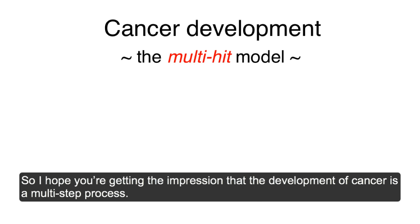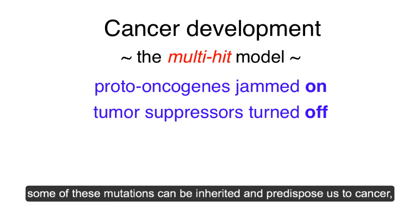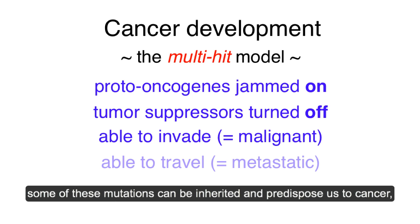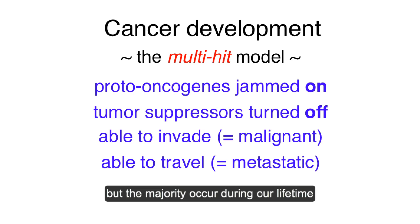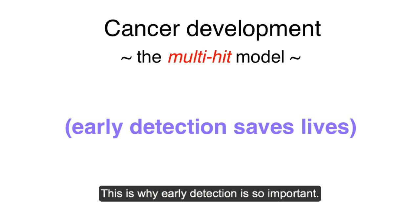So I hope you're getting the impression that the development of cancer is a multi-step process. Several mutations must be present. Some of these mutations can be inherited and predispose us to cancer. But the majority occur during our lifetime and during the growth of the tumor itself. This is why early detection is so important.